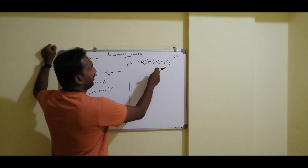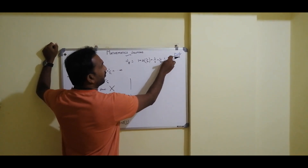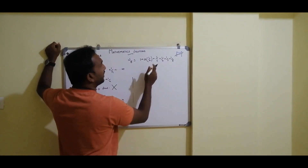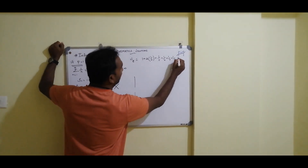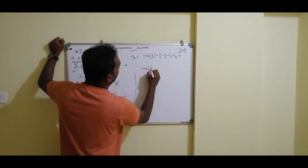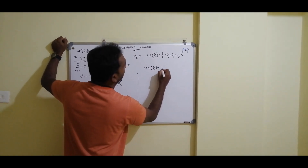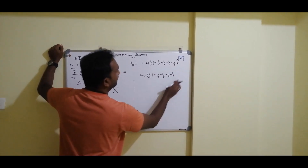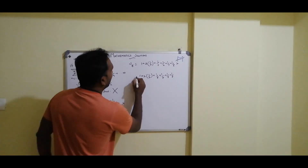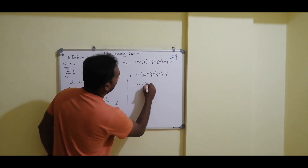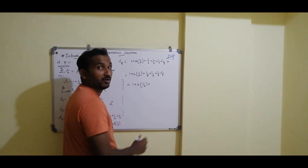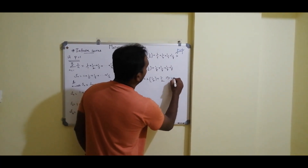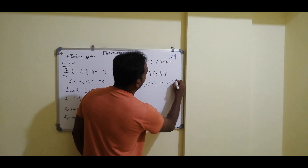So S8 > 1 + 2×(1/2) + 1/2 = 1 + 3×(1/2). Substituting N = 4, we get S16. The first 8 terms give more than 1 + 3×(1/2). The next 8 terms are 1/9 + 1/10 + ... + 1/16. Replacing all terms from 1/9 to 1/15 with 1/16, these 8 terms are greater than 8×(1/16) = 1/2. So S16 > 1 + 3×(1/2) + 1/2 = 1 + 4×(1/2).